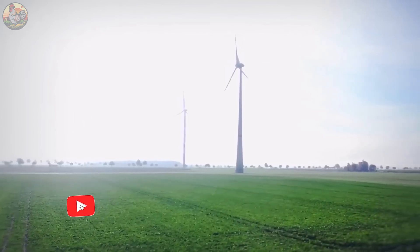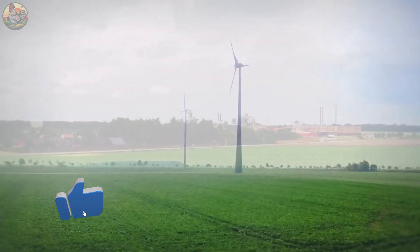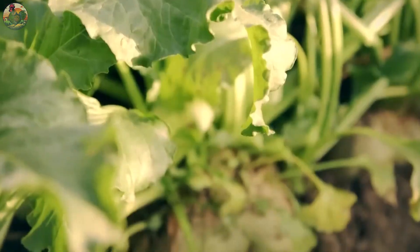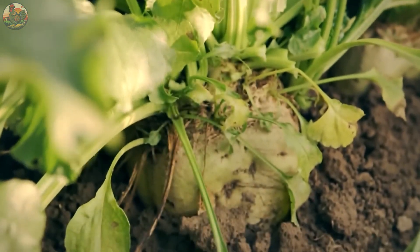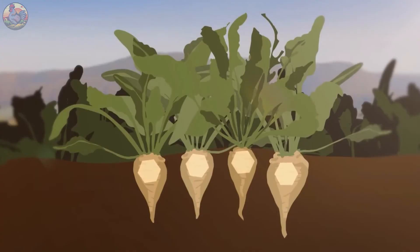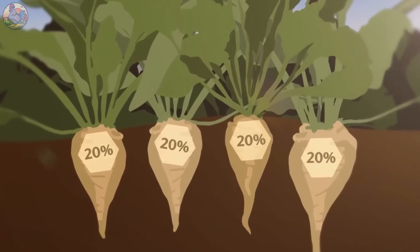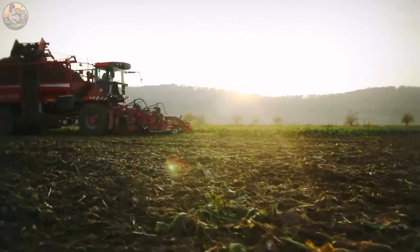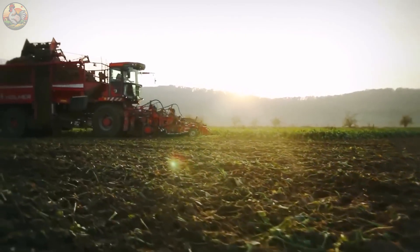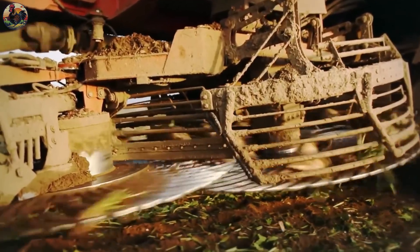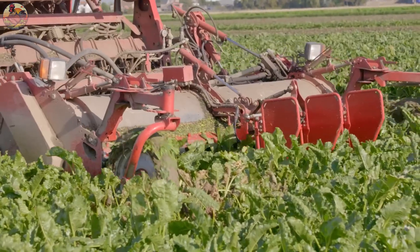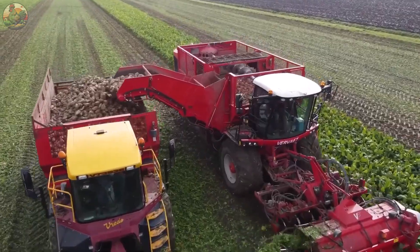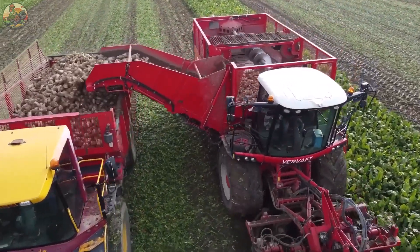Sugar is a simple carbohydrate, commonly used to sweeten foods and drinks. Sugar can be found naturally in sources such as fruits, sugarcane, radishes, berries, coconut flowers and some other plants. However, sugar beets and sugarcane are the primary sources of sugar because they have the highest percentage of sucrose of all plants.